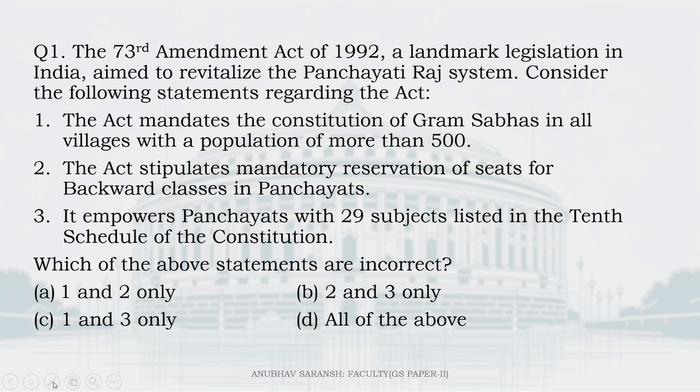Statement one: The Act mandates the constitution of Gram Sabhas in all villages with a population of more than 500. According to the provisions of the Panchayati Raj system under our constitution, a Gram Sabha is a body comprising persons registered in the electoral rolls — that's the voter list — relating to a village within the area of the Panchayat at the village level. The requirement for a Gram Sabha does not specifically hinge on villages having more than 500 people. Rather, it exists in every village with a proper voter list and electoral roll, irrespective of population size. So, statement one is wrong.